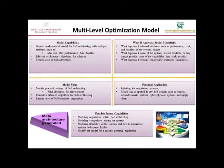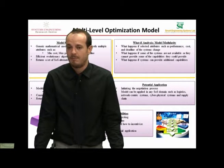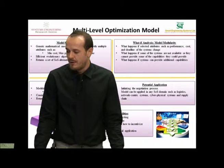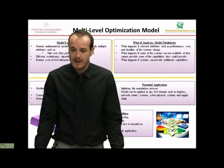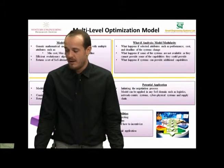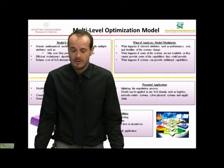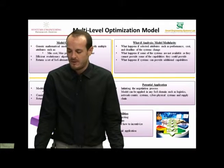Also, this model enables doing what-if analysis, such as what happens if selected attributes — such as performance, cost, and deadline of the systems — change. For example, what if a system can provide a capability with better performance value? How will the architecture change? Furthermore, we can do what-if analysis on what happens if some selected systems are not available anymore, or cannot provide their capabilities, or if we have new additional systems.